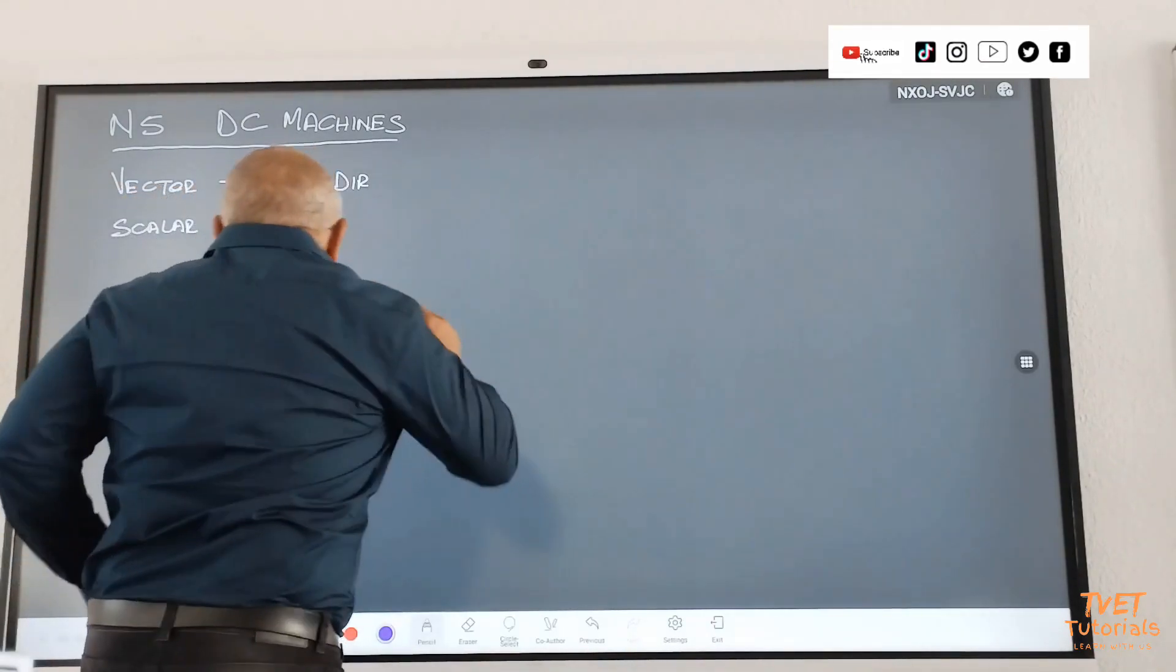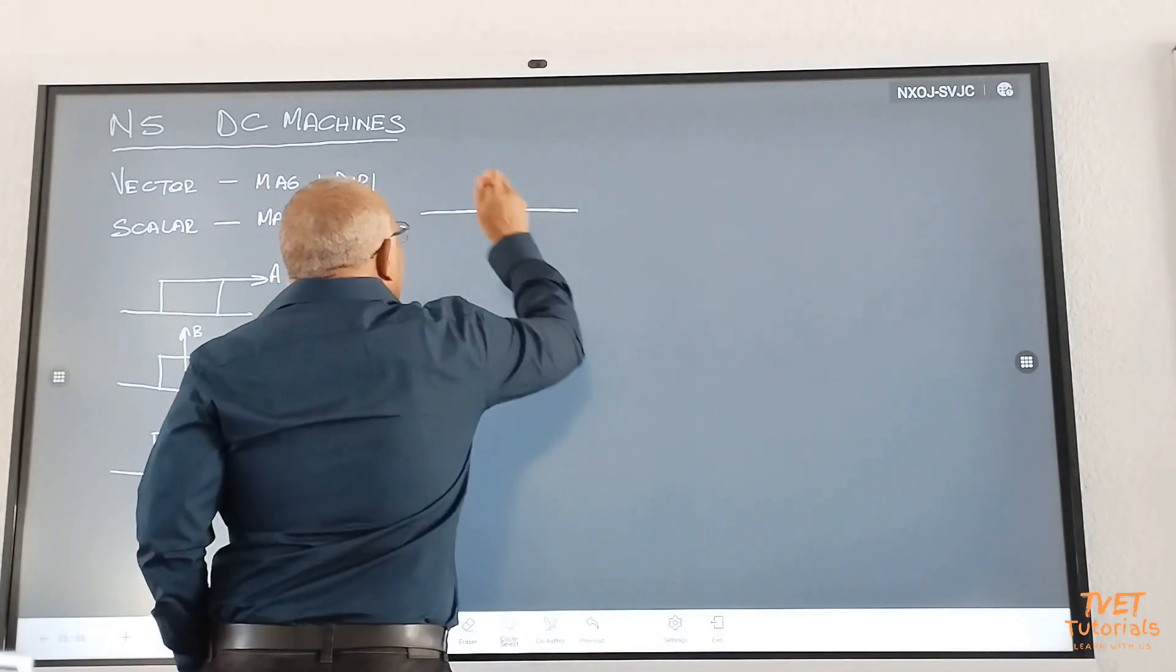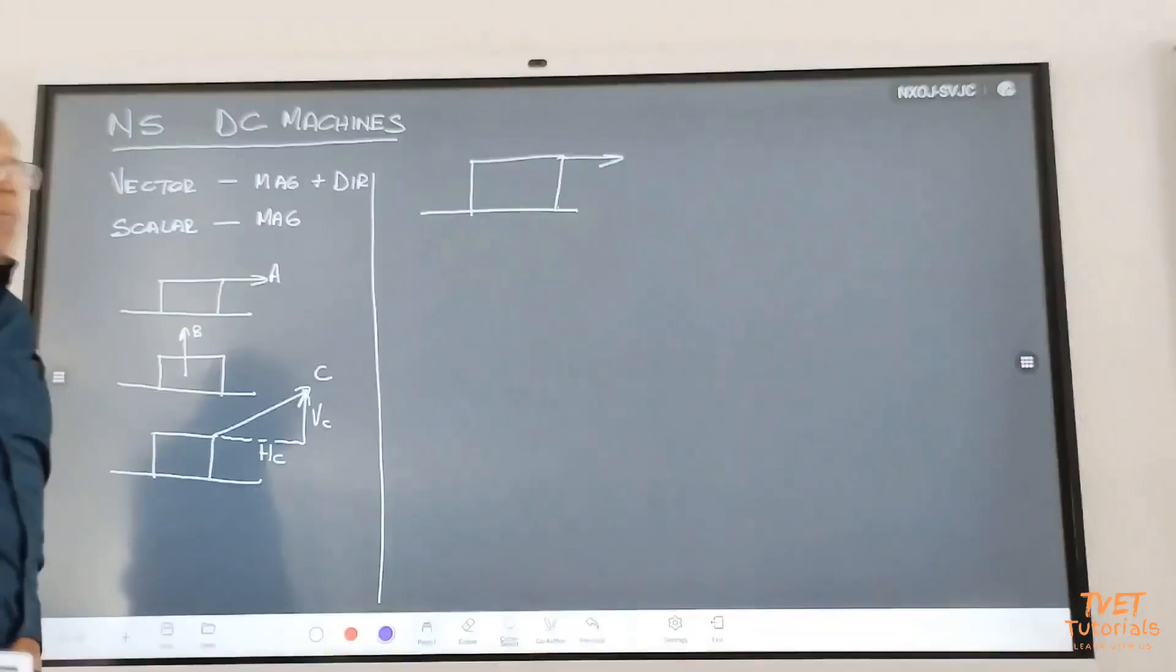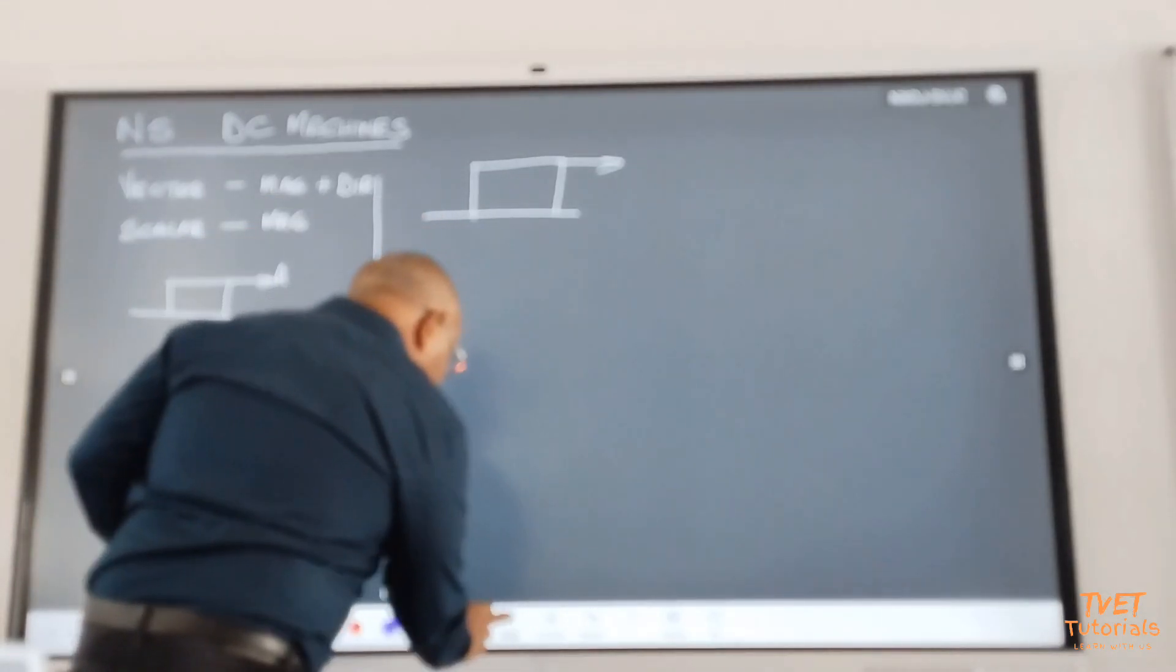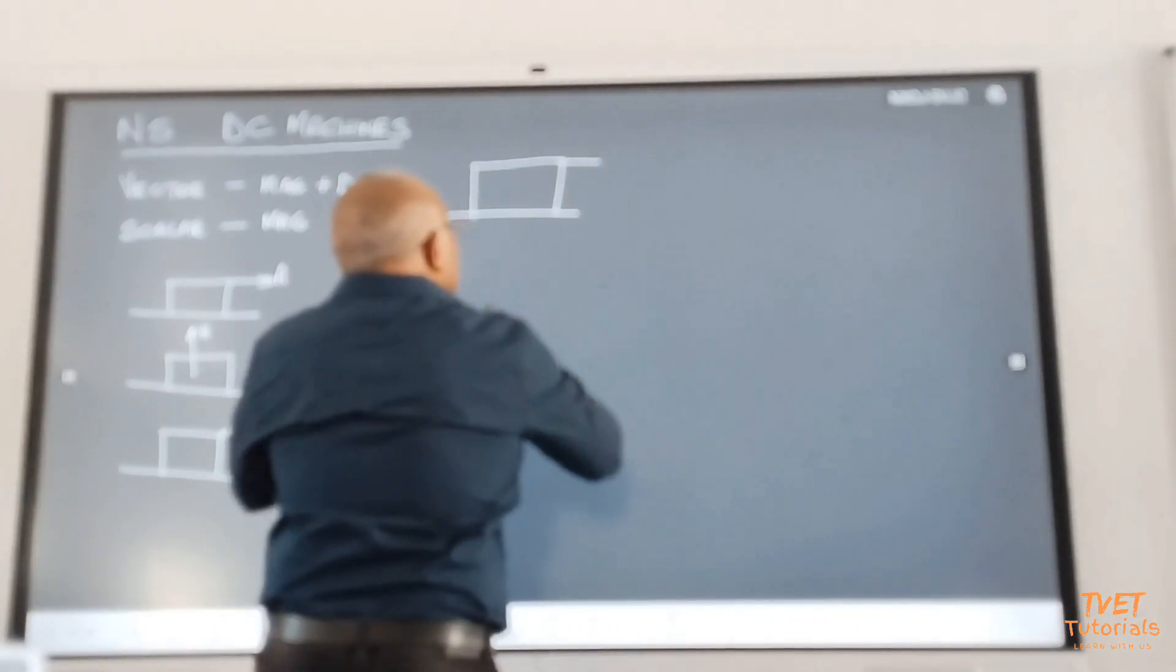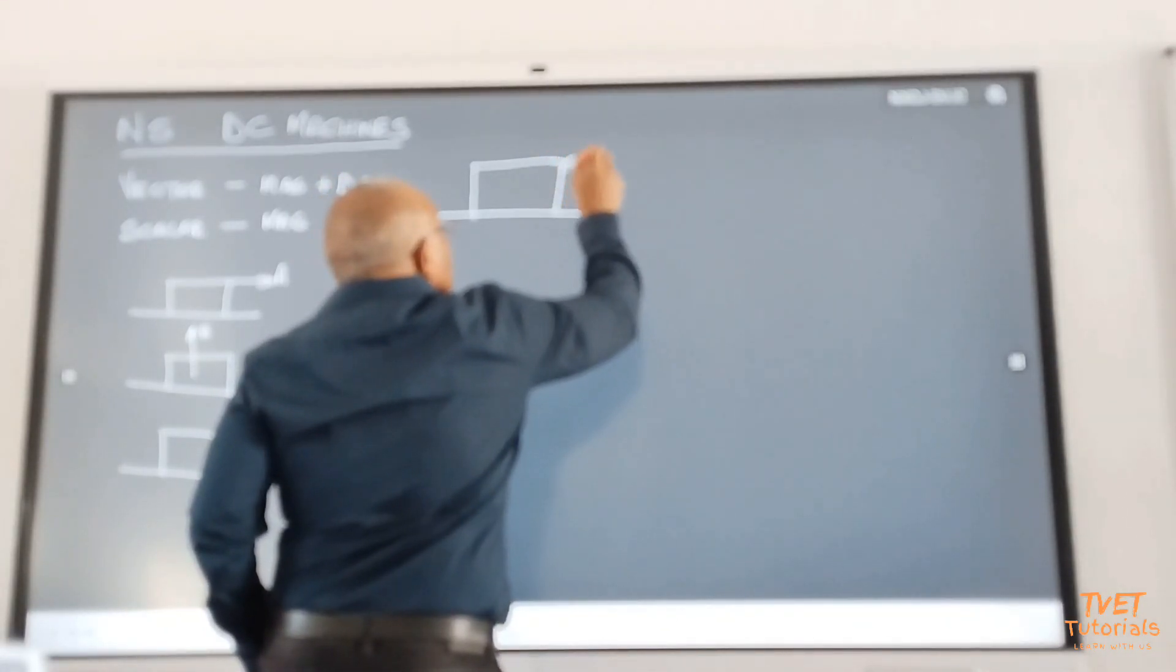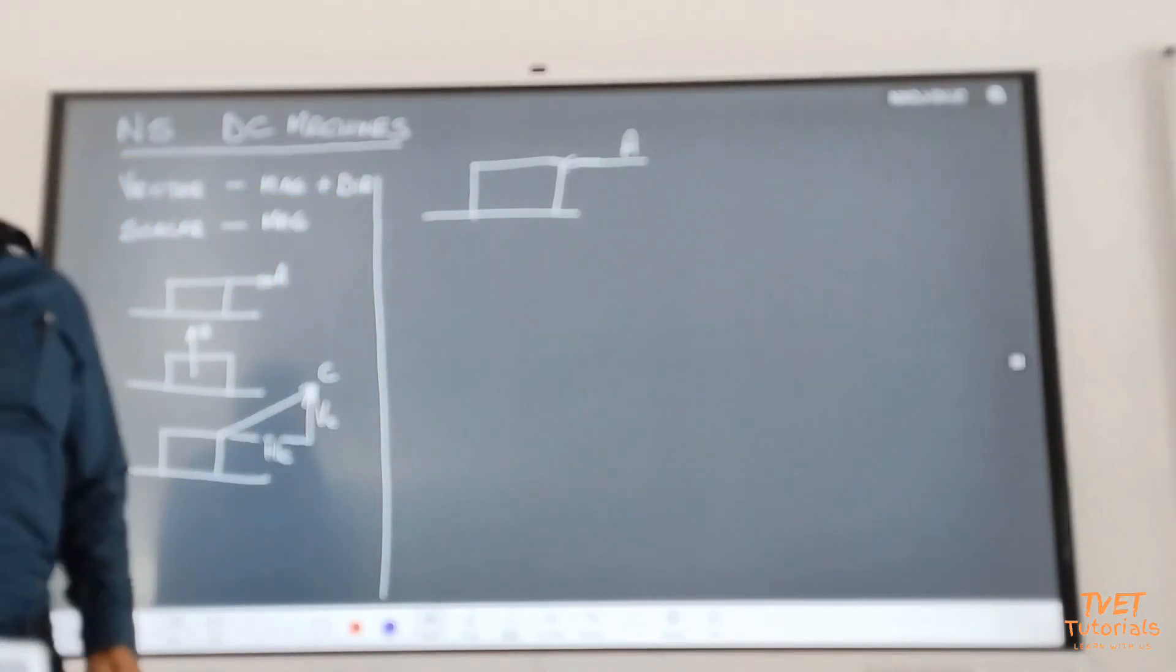Now, if I take an example like this, here's a block of wood, which is being pulled. Let me say it's being pushed. Because I want to demonstrate a simple concept. This block of wood is... So there's a block of wood, A, which is being pushed.